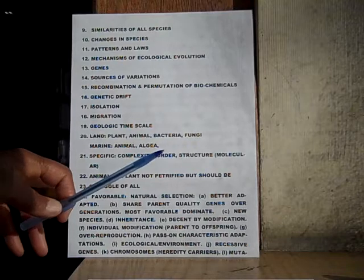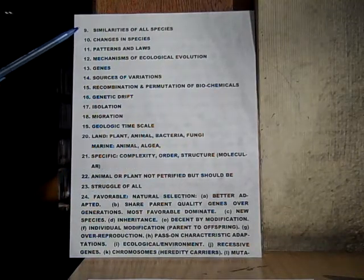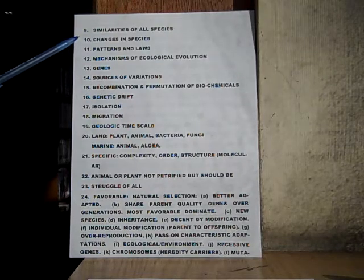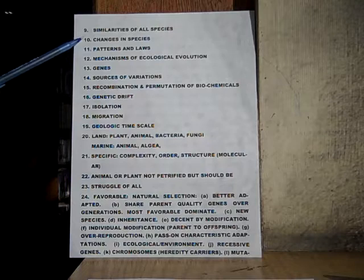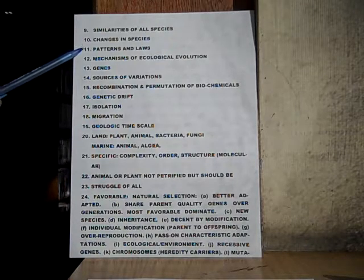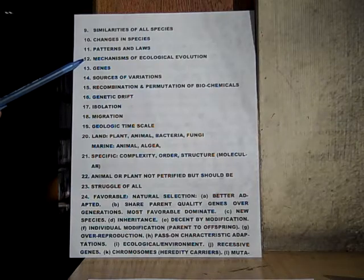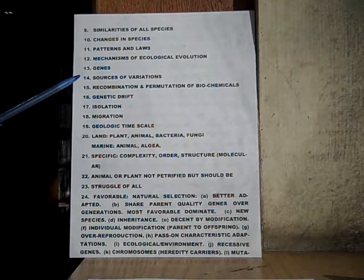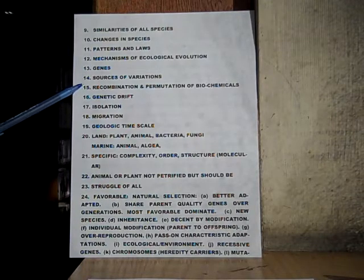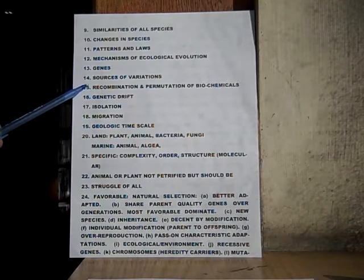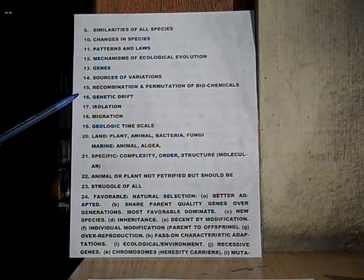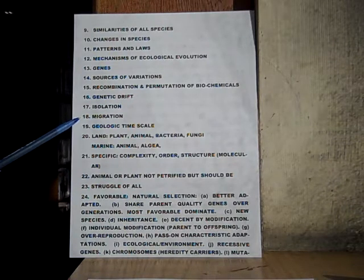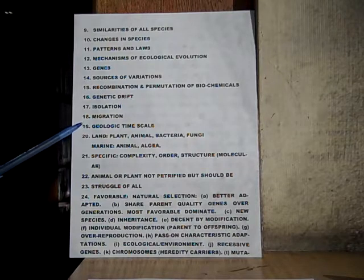We'll continue now. Number nine: similarities of all species — all of the similarities that every species have. Number ten: changes in species. Number eleven: patterns and laws. Number twelve: the mechanisms of ecological evolution. Thirteen: genes — G-E-N-E-S. Fourteen: sources of variations. Fifteen: recombination and permutations of biochemicals. Sixteen: genetic drift. Seventeen: isolation of species and so forth. Number eighteen: migration.